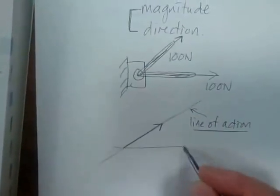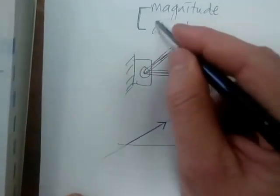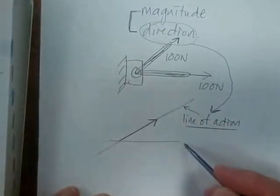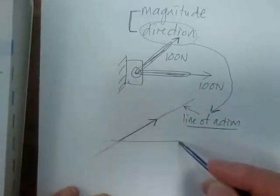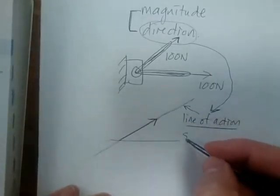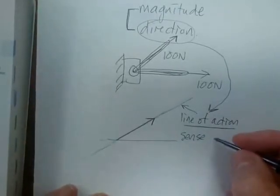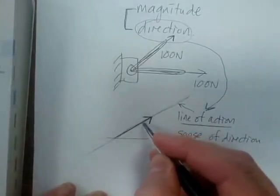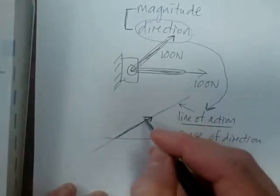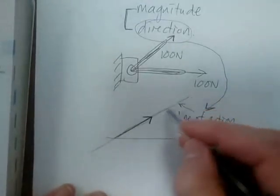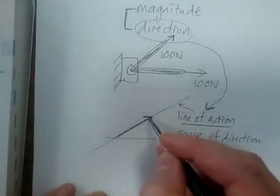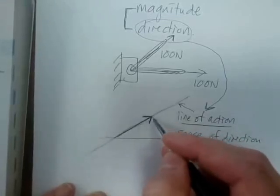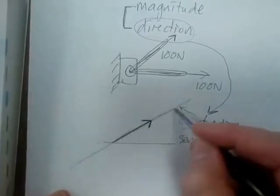Another thing which the textbook speaks about is the direction. When we talk about direction, this textbook speaks about the direction of the line of action in relation to a certain reference. It also speaks about the sense of direction. The sense of direction simply refers to the arrow — the tip, the head of the vector. So if I ask you what is the sense of direction, you'll say the sense is where the arrow is pointing. That's the sense. The sense of this force vector is that direction, and the line of action is the line along which the vector is acting.